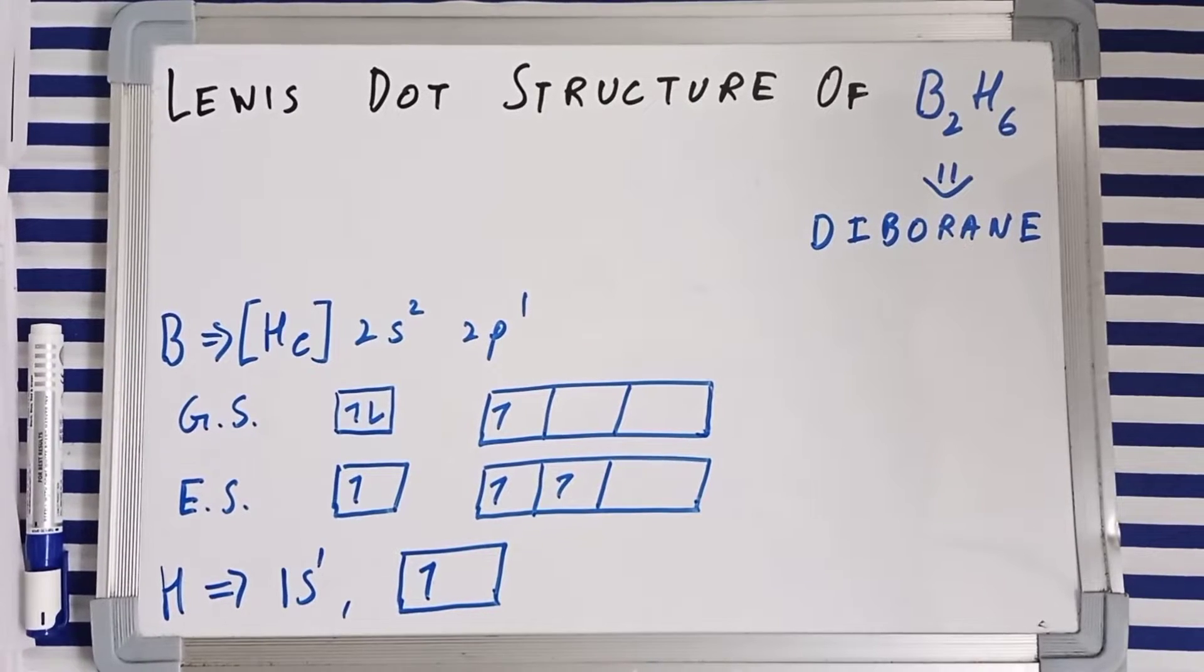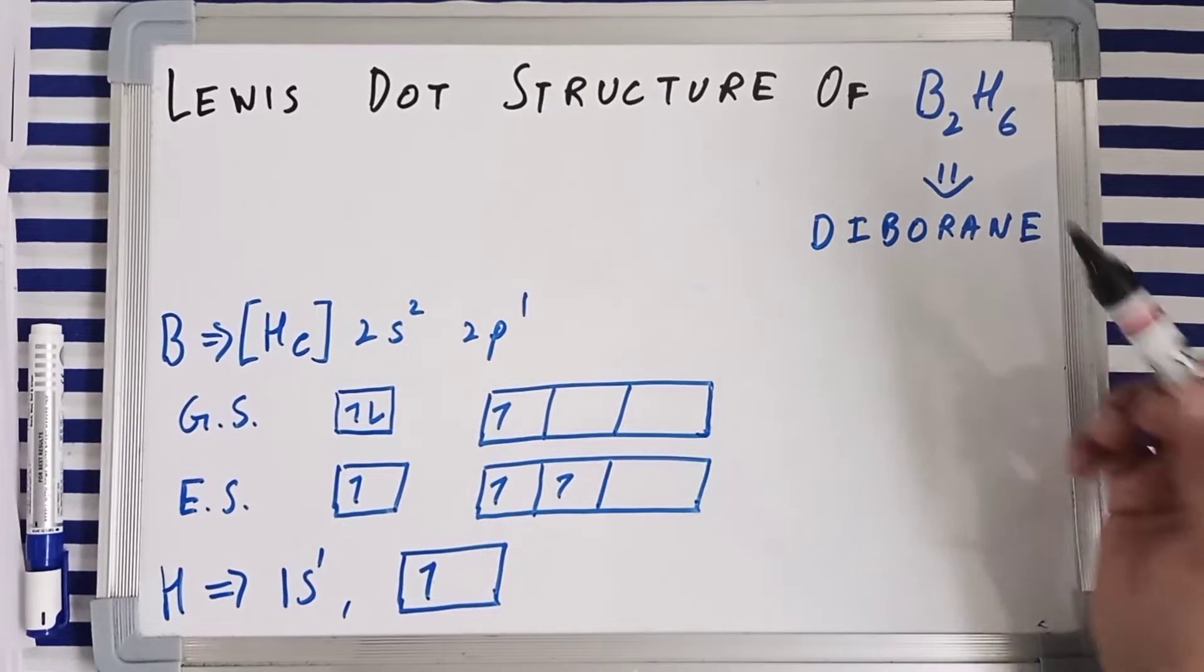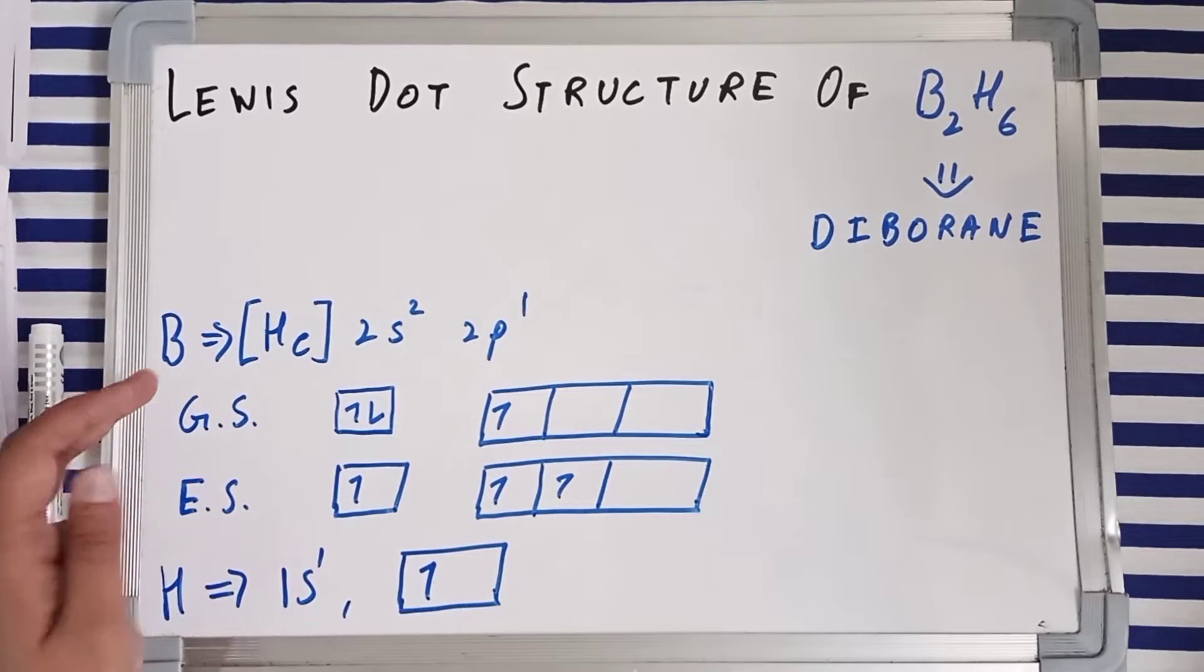In order to draw the Lewis dot structure of B2H6, which is diborane, we need to find out the valence electrons of the different atoms present in B2H6, which are boron and hydrogen.